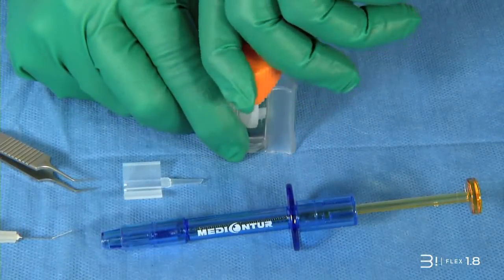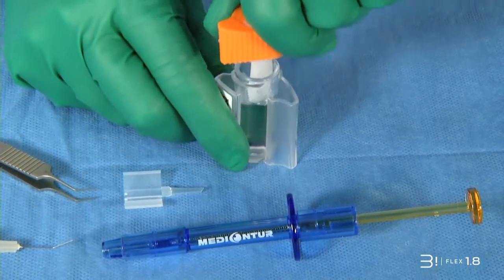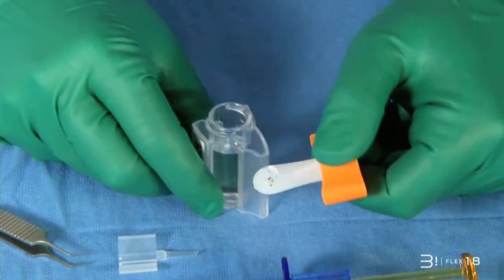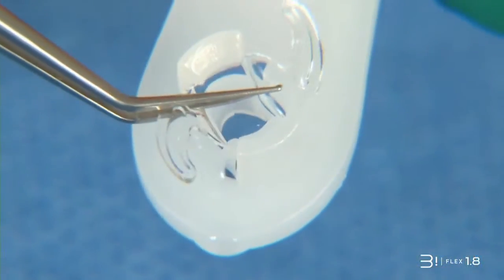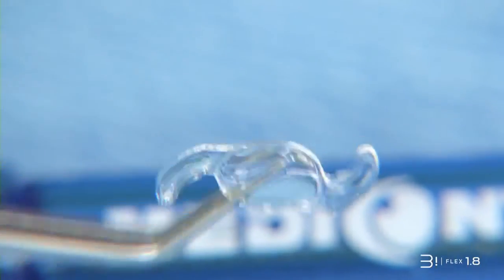Unscrew the stopper of the flask. Carefully extract the top shaft supporting the implant. Delicately seize the Biflex implant so as to preserve optic quality.